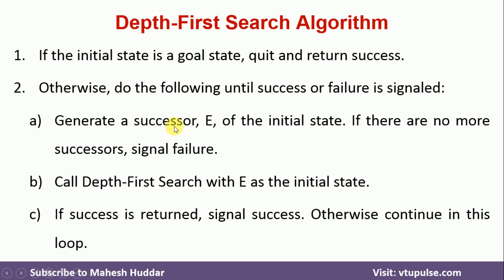We will generate a successor E of the initial state. We have an initial state, we will find the successor of that particular initial state and call it E. If we don't have any successor, it means we have not reached the goal state, so we will return failure. If we have a successor E, we will call this depth first search algorithm again with E as the initial state. Previously the initial state was the first state; we got the successor E, and now E has become the initial state. Until we reach the goal state, we keep calling DFS recursively in this manner.